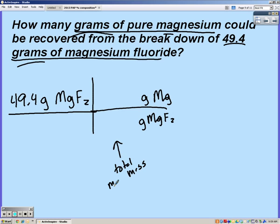So this is just like our percent problem, but instead of multiplying by 100, we're multiplying by the mass they gave us, because we're going to put our total mass of magnesium fluoride on bottom and then the mass due to magnesium on top.